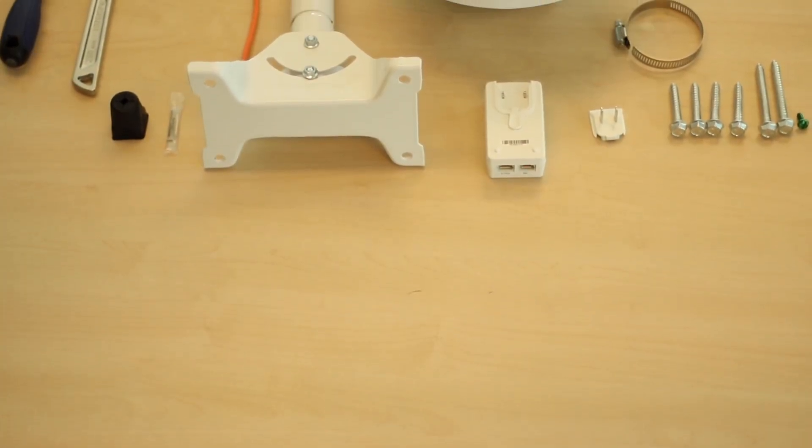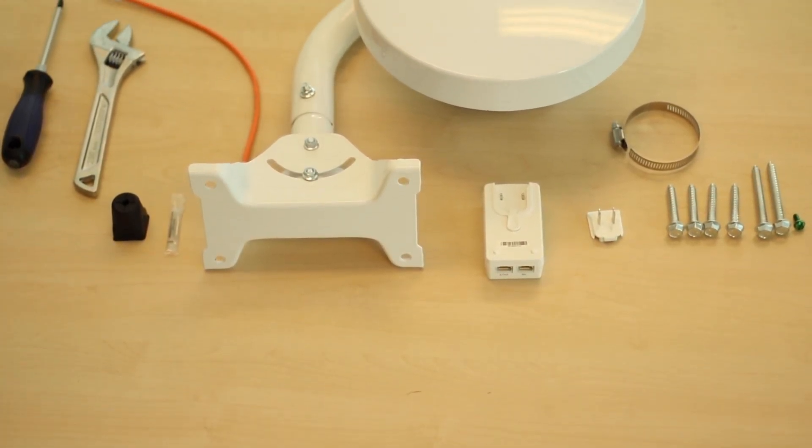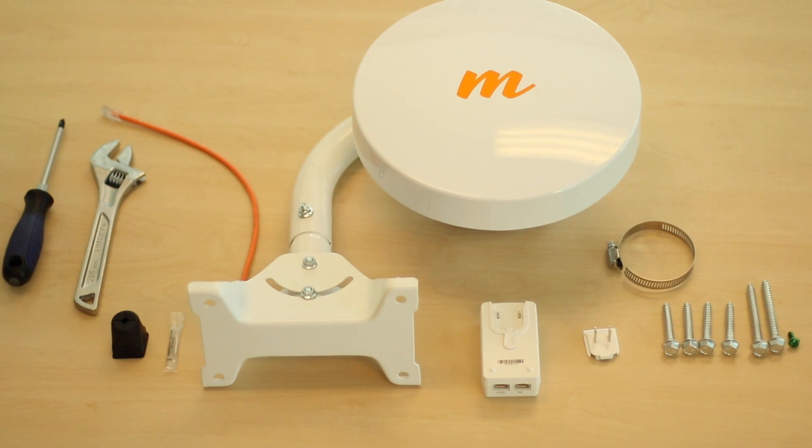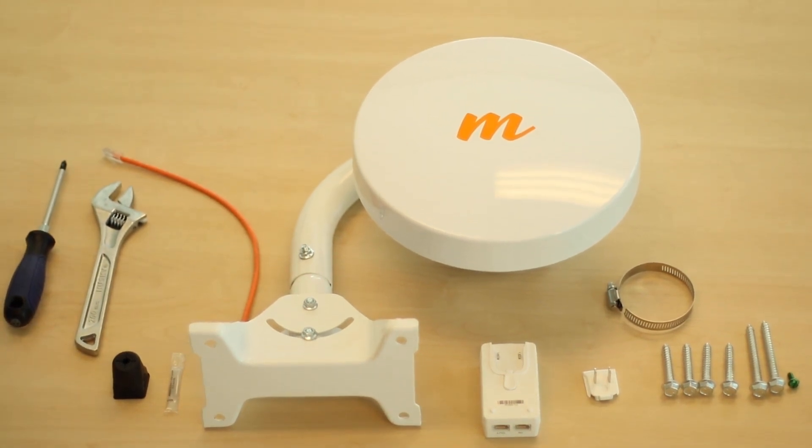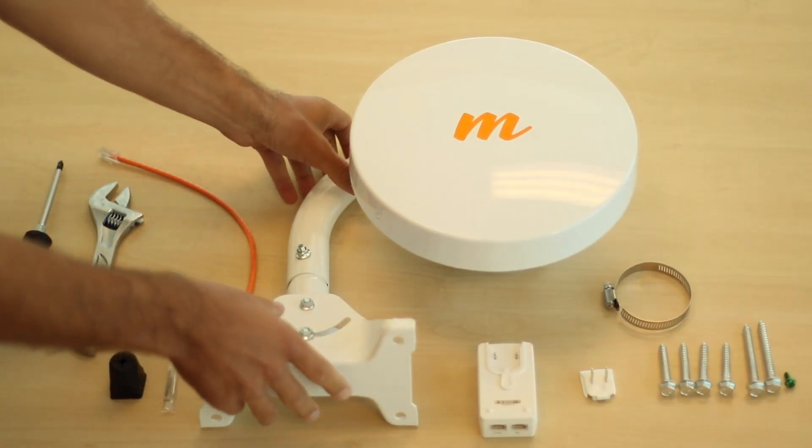The Mimosa B5 Lite radio box comes with two complete radio sets, including the cable gland, the mount, mount clamp, the power supply, and the radio itself.